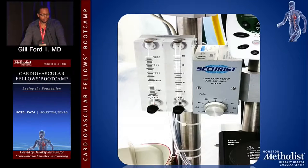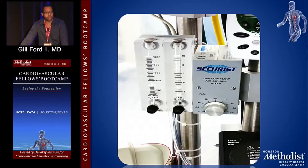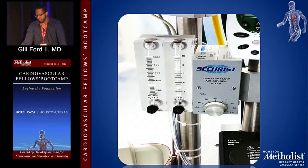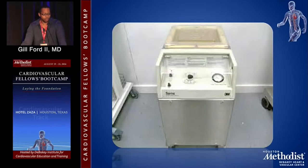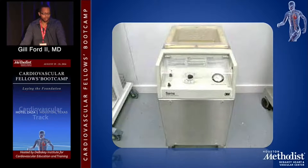This is how we deliver gas. The silver part is the blender, which allows us to dial in what percent of oxygen we want to deliver to the patient. The clear side is the flow meter, which dials in how much oxygen we want to deliver in liters. We also have an external heater-cooler that hooks up to the heat exchanger — you'll see various models at different institutions; this one is the Sarns 3000.